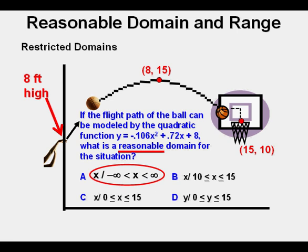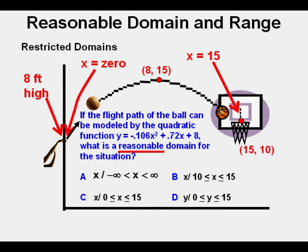On closer examination, the domain extends from the release of the ball from Joe's hand here at x = 0, all the way to here at the basket on the right where x = 15.